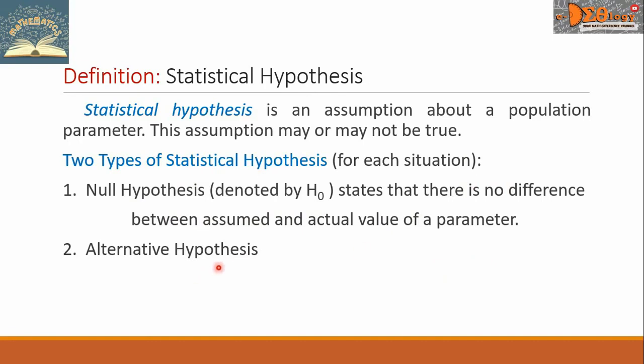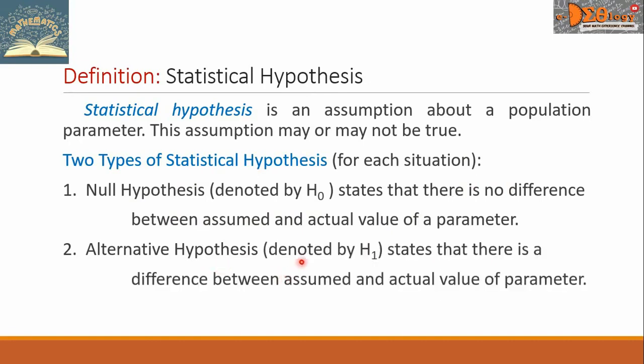While Alternative Hypothesis is denoted by H sub 1, it states that there is a difference between assumed and actual value of a parameter.